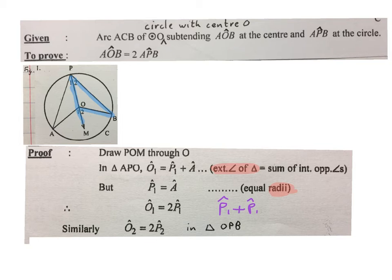Now, if you go into triangle OPB, the blue one, you can similarly just write, O2 is equal to 2 times P2.